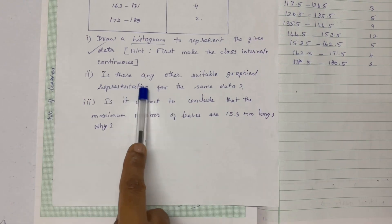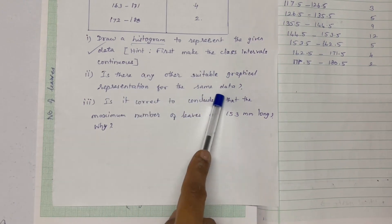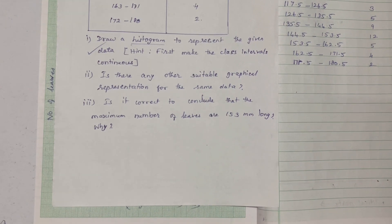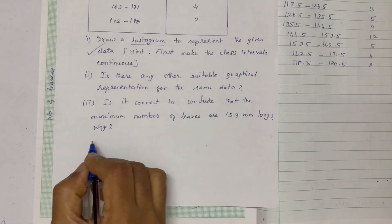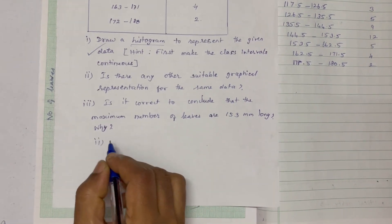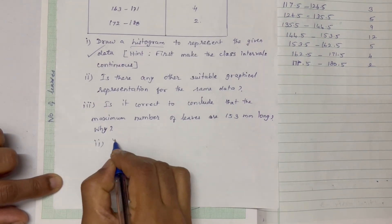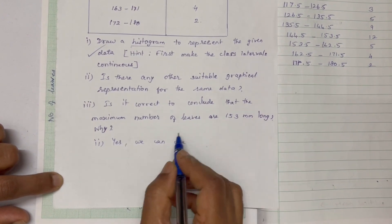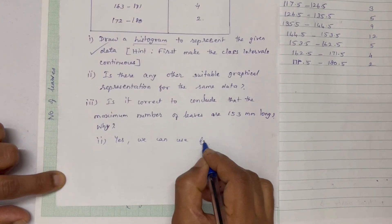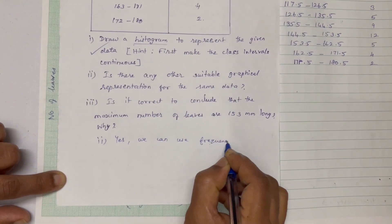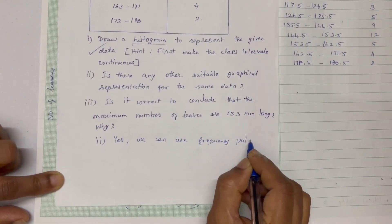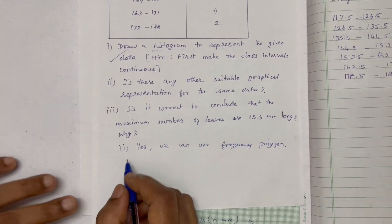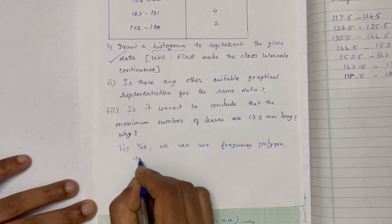We will see the frequency polygon. We will look at the class mark and the frequency polygon. Yes, there is another way to represent the above data — it is the frequency polygon. We can use a frequency polygon to represent the above data.